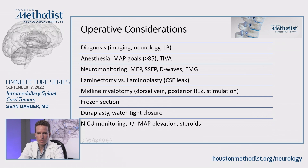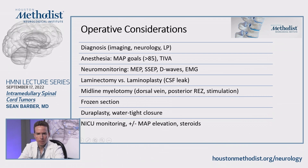Pathology is very important intraoperatively. Since astrocytoma often can't be totally resected due to lack of a clear plane, it's important to get tissue early, obtain a frozen section, and determine what type of tumor you're dealing with before pushing further with dissection. When closing the dura, this can be done primarily or with a duroplasty — sewing in a patch — which is sometimes done if tumor recurrence is a concern, giving the patient more room for cord expansion before compression occurs.